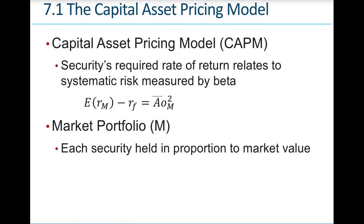It's important because the output is the expected return on an investment, and that's going to depend on three things: the risk-free rate, the expected return of the overall market, and the stock's beta. With these three inputs, we can use this formula to calculate the required rate of return on an investment.